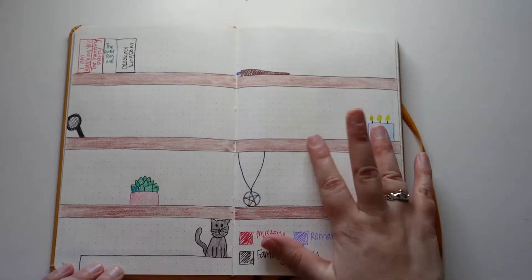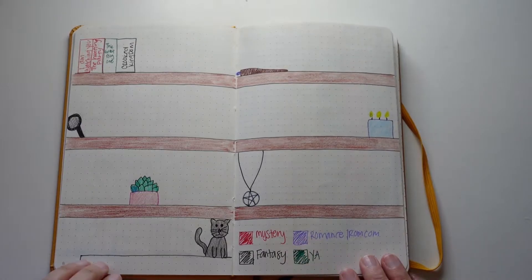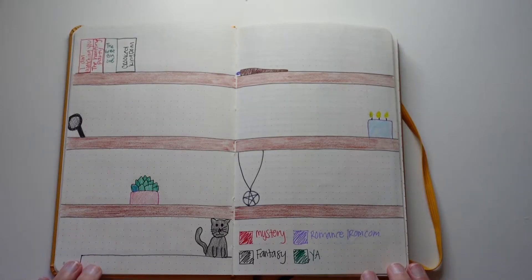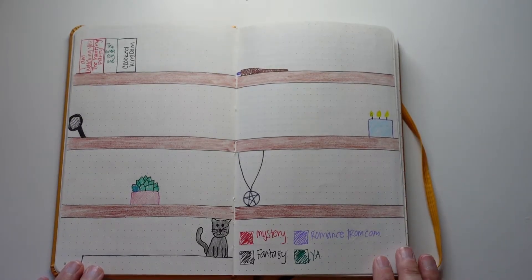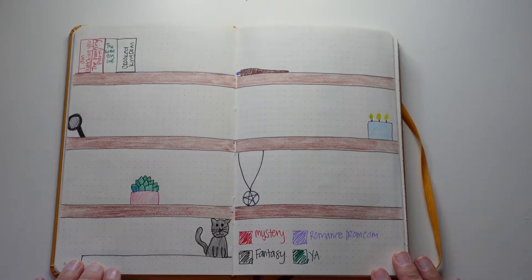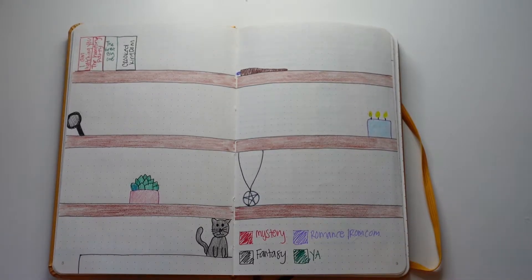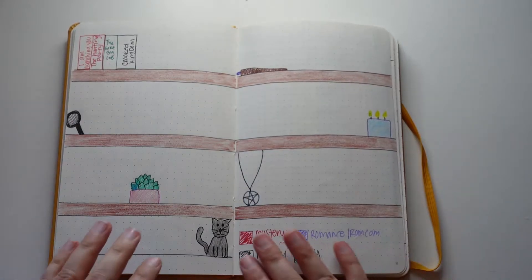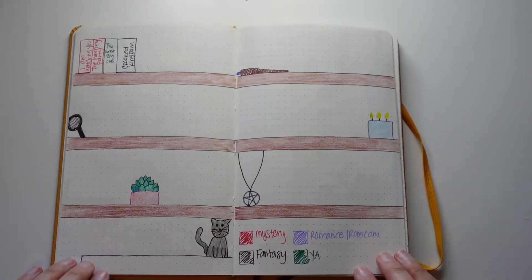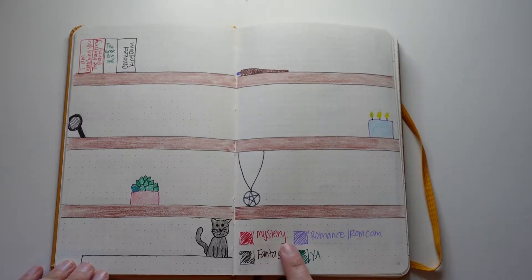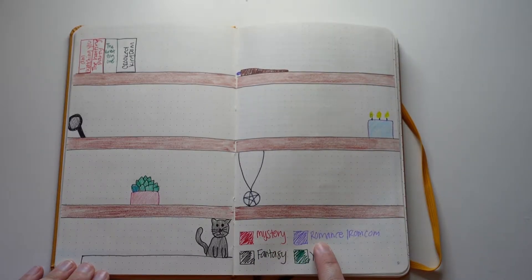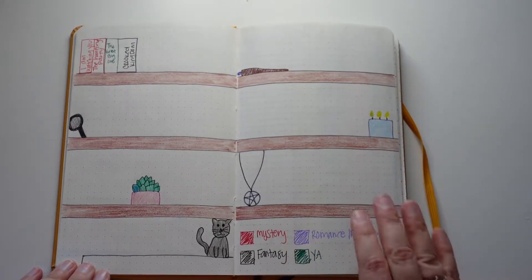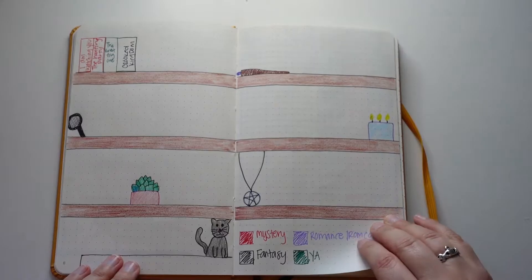The first spread in my reading journal is my bookshelf bookcase kind of thing. As I finish a book I will add it to my bookcase. I'm actually two books behind. It's got some fun cute decorations like my cat, my Marnie necklace and a candle. I do color code it by genre. I have mystery, fantasy, romance, young adult. And I will add genres as I need. I'm actually reading a horror book right now so I got to add that.